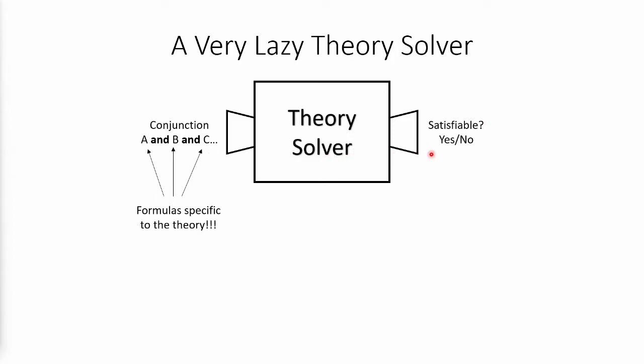An example for that would be Gauss-Jordan elimination for a system of linear equations. And the theory solver can operate only on formulas specific to its theory.